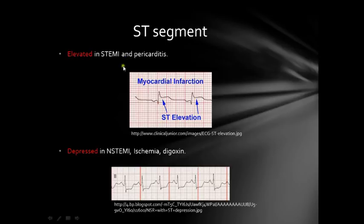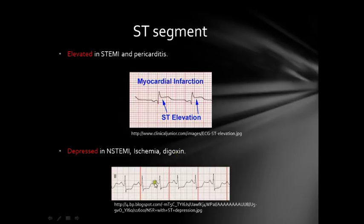The ST segment is elevated in ST elevation myocardial infarction and pericarditis — you can see the ST segment elevation above the TP baseline. It is depressed in non-ST elevation myocardial infarction, ischemia such as stable angina and unstable angina, and in digoxin toxicity. You can see ST segment depression here, and also T wave inversion — this is probably an ischemic change.